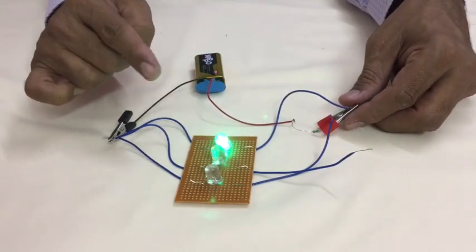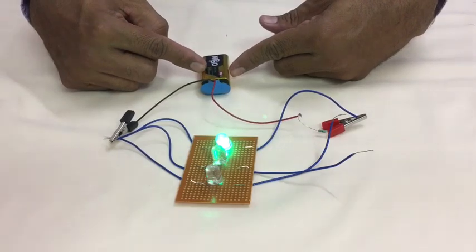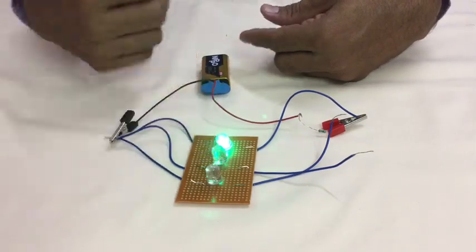That means, in parallel combination, the brightness will not change because 9 volt voltage will be same across all the bulbs.